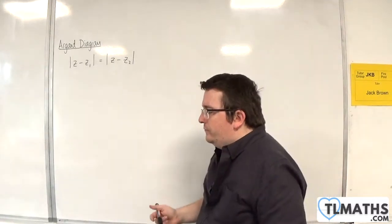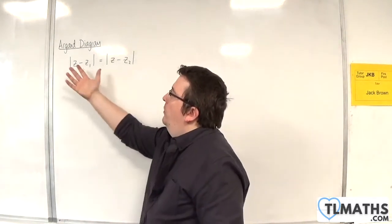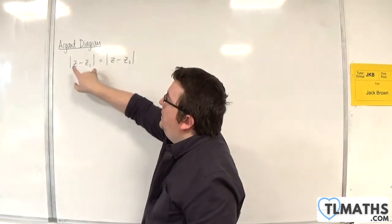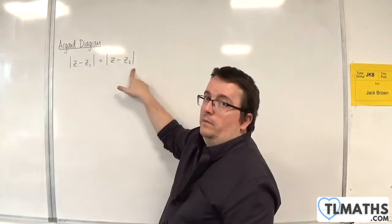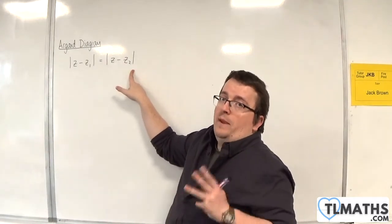What I want you to think about first is what would this be if it was |z - z1| equals some number K, for example. We know that's going to be a circle.